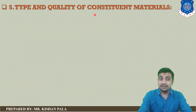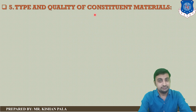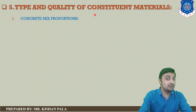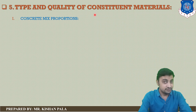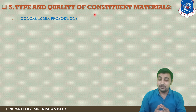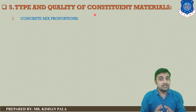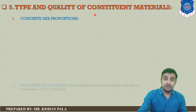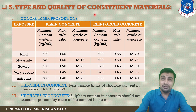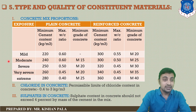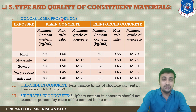Let us discuss type and quality of constituted materials. The first is concrete mix proportions. In concrete mix proportions, we focus on the water-cement ratio and minimum cement content. The table on screen shows different exposure conditions — mild, moderate, severe, very severe, and extreme — in the first column, with the next three columns showing plain concrete (PCC) requirements.